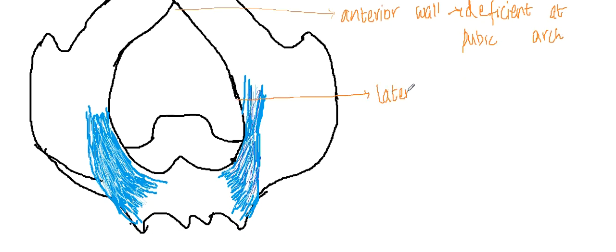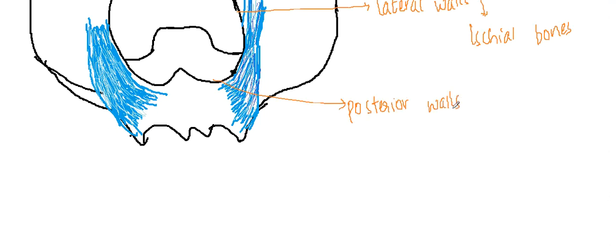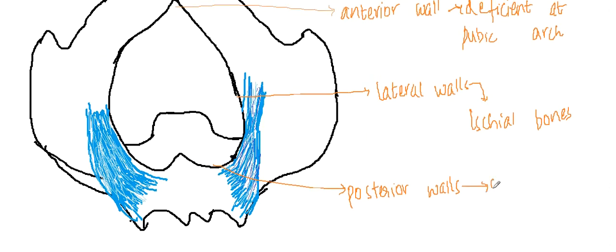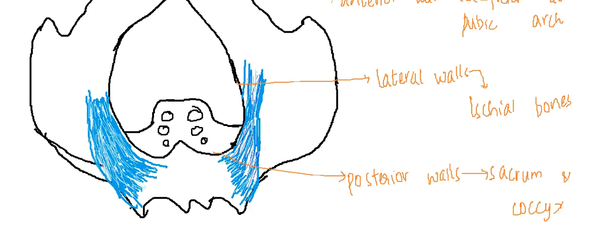The lateral walls are formed by the ischial bone, and the posterior walls are formed by the sacrum and coccyx. These are the boundaries of the pelvic outlet.